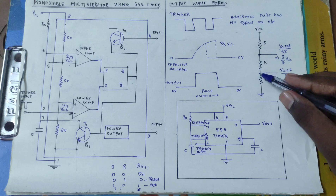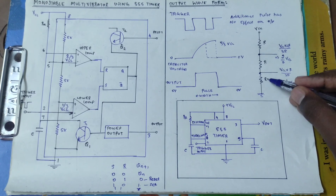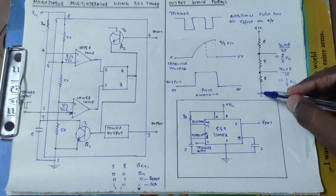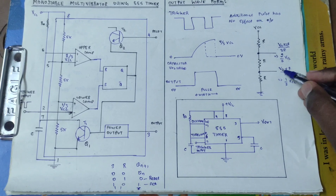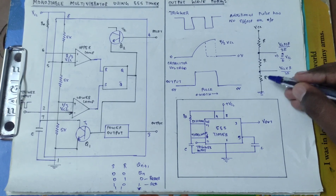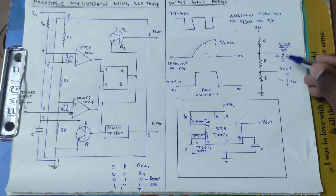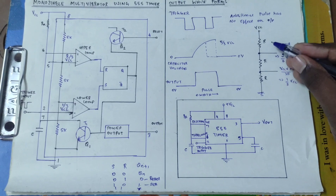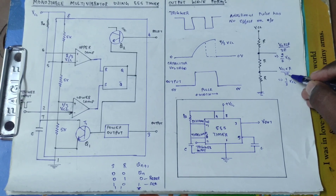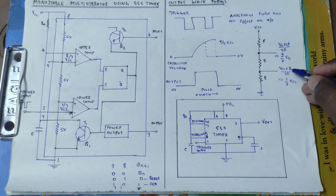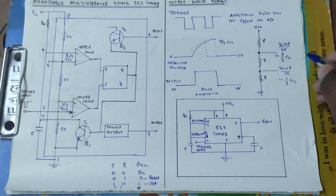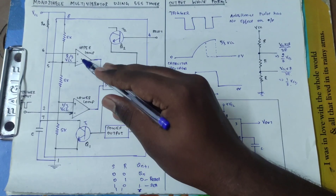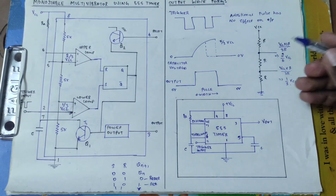The corresponding resistance at the next point is R. So Vcc into corresponding resistance divided by total R1 plus R2 plus R3, that is 3R. Vcc into R by 3R gives 1/3 Vcc. We will represent this.